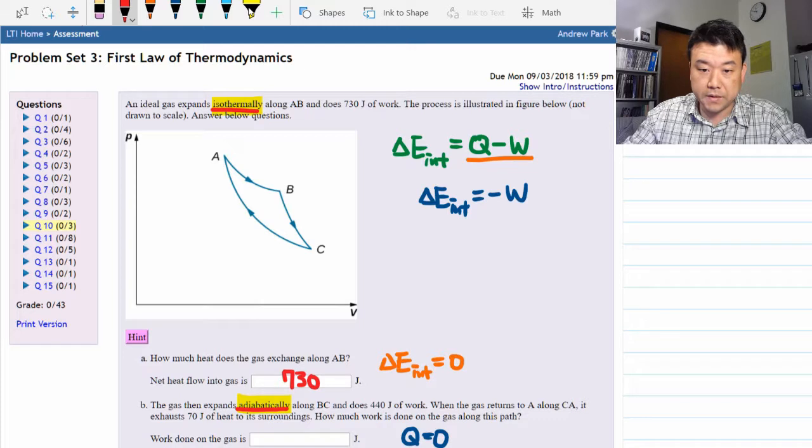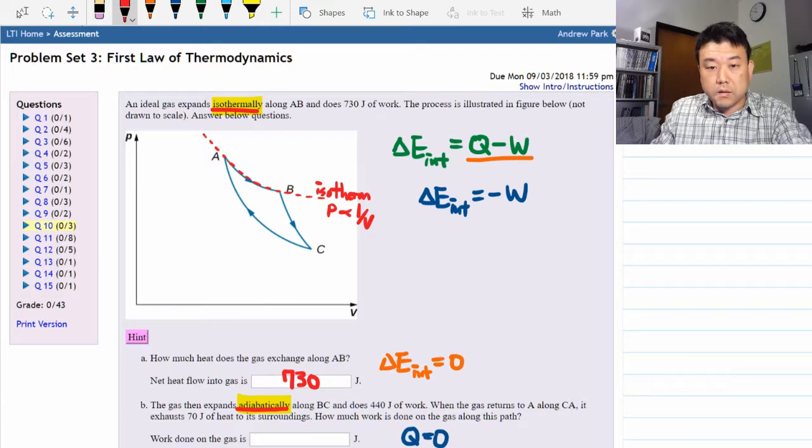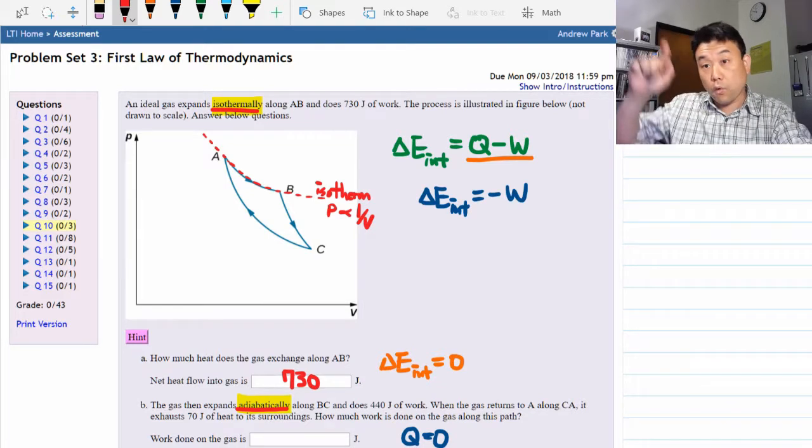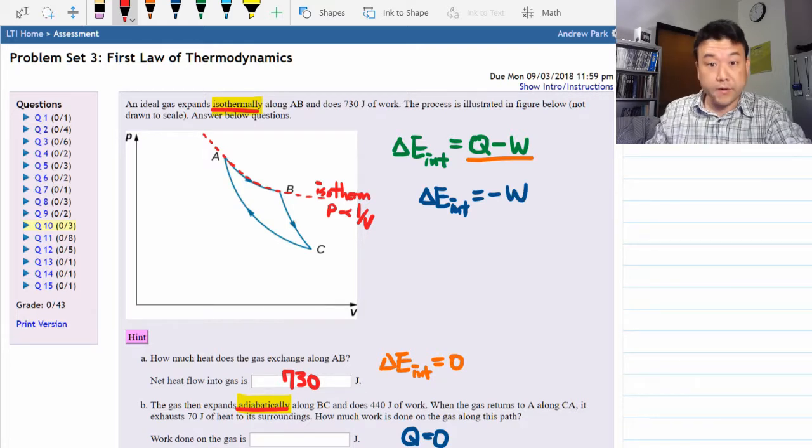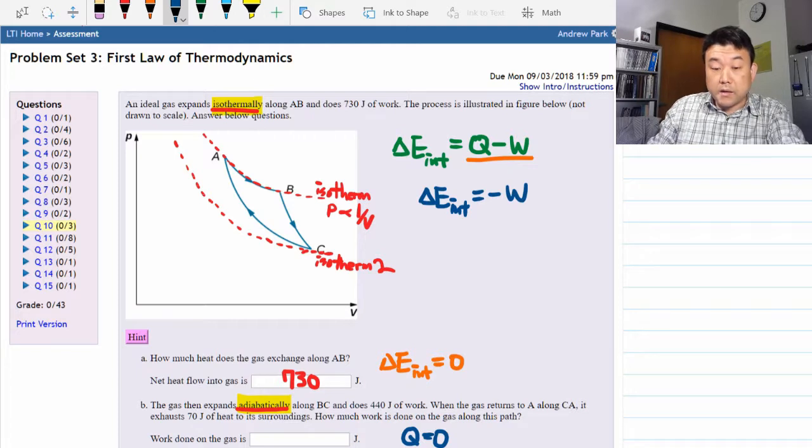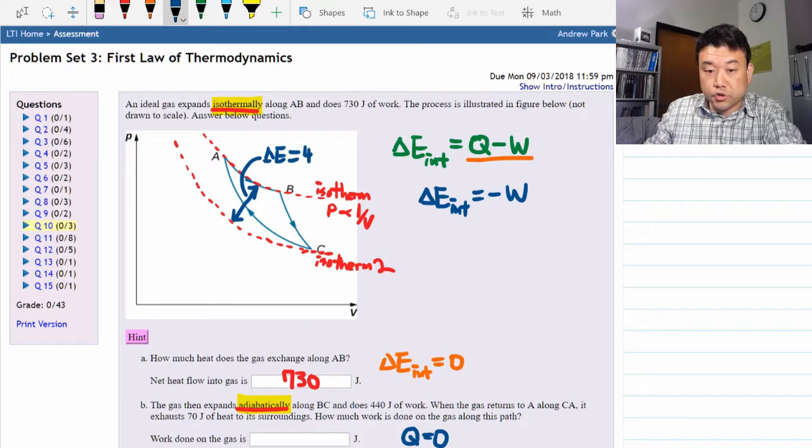Points A and B are only what we call an isotherm. It's what looks like 1 over x curve. Along this isotherm the internal energy is constant. That's why we call it isotherm. Now point C is on a different isotherm. What we can quickly figure out from the information given in part B is that these two isotherms correspond to two sets of states that have energy difference of 440 joules.